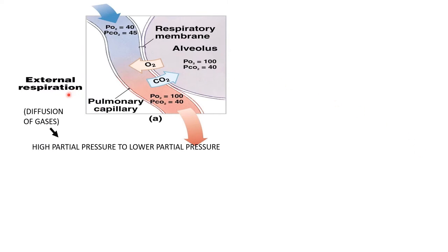Moving on to the second part, which is external respiration. In this, diffusion of gas takes place — gas diffuses from higher partial pressure to lower partial pressure. For example, in the alveoli the oxygen partial pressure is 100 and in blood the partial pressure of oxygen is 40. So oxygen diffuses from the alveoli to the capillaries. Carbon dioxide's partial pressure in the capillary is 45 and in the alveoli is 40, so diffusion of carbon dioxide takes place from capillaries to alveoli.